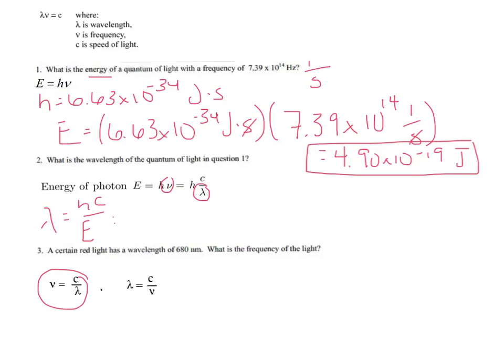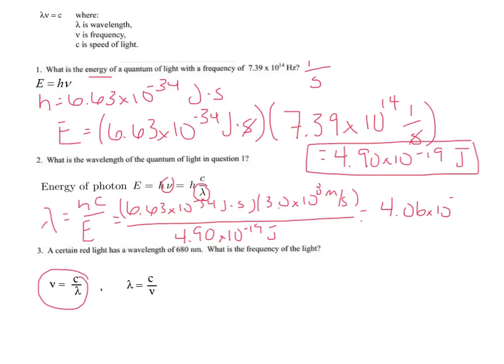So if we do that, then we have 6.63 times 10 to the negative 34th joules times seconds, times C, which is 3.0 times 10 to the 8th meters per second, all over the energy which we just calculated, which was 4.90 times 10 to the negative 19th joules. And the answer comes out to be 4.06 times 10 to the negative 7th. The joules cancel here, the seconds cancel there, leaving you with meters.